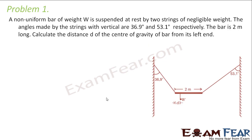The problem says that a non-uniform bar of weight W is suspended at rest by two strings of negligible weight. The angles made by the strings with the vertical are 36.9 degrees and 53.1 degrees respectively. The bar is 2 meters long.